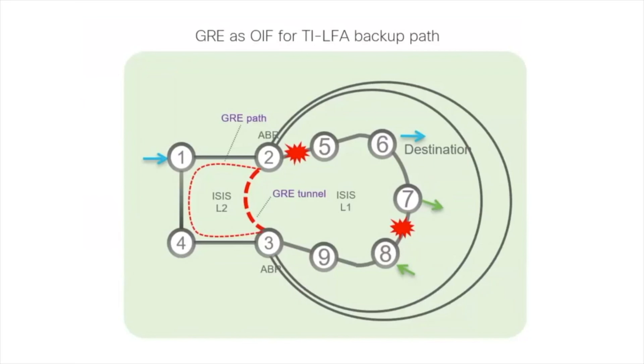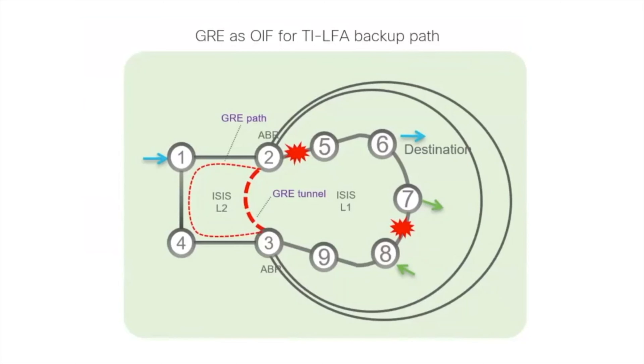With the GRE tunnel used as a logical interface, the IGP can compute a backup path that leverages it. The path of the GRE tunnel traverses interfaces on level two, shown with the thinner dotted line. This provides a rich multi-level, multi-domain design — even in situations where ABRs cannot be directly connected, which is typically a non-technical constraint. The IGP can still pre-compute backup paths within each level, handling failures like the failure between two and five or between seven and eight, leveraging the GRE tunnel between the two ABRs.